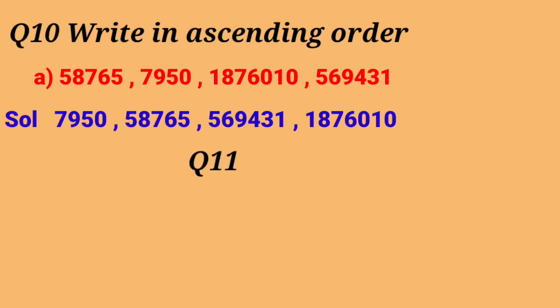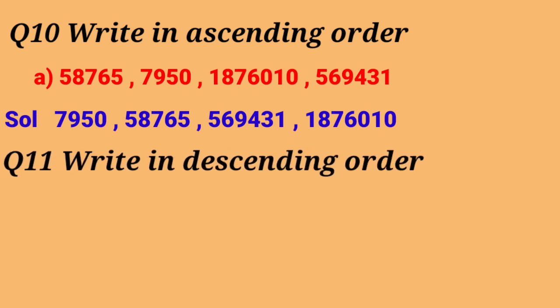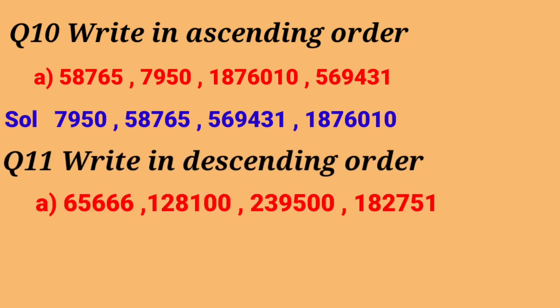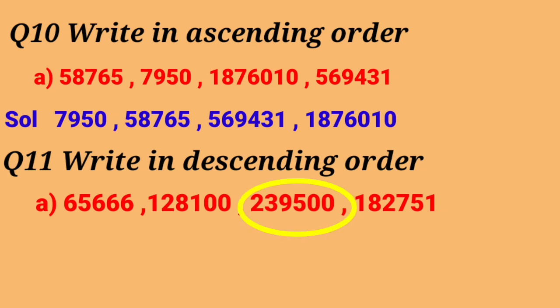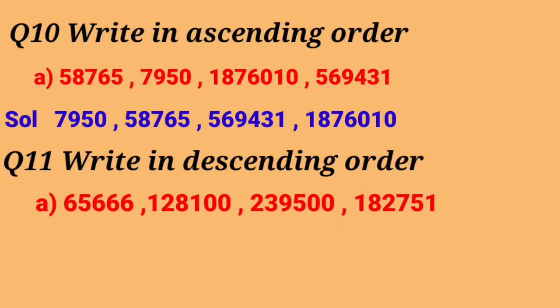Now next we have question number 11 — write in descending order. First of all, let's see the number of digits in all the numbers. The first one has 5 digits, the second one has 6 digits, the third one has 6 digits, and the last one also has 6 digits.